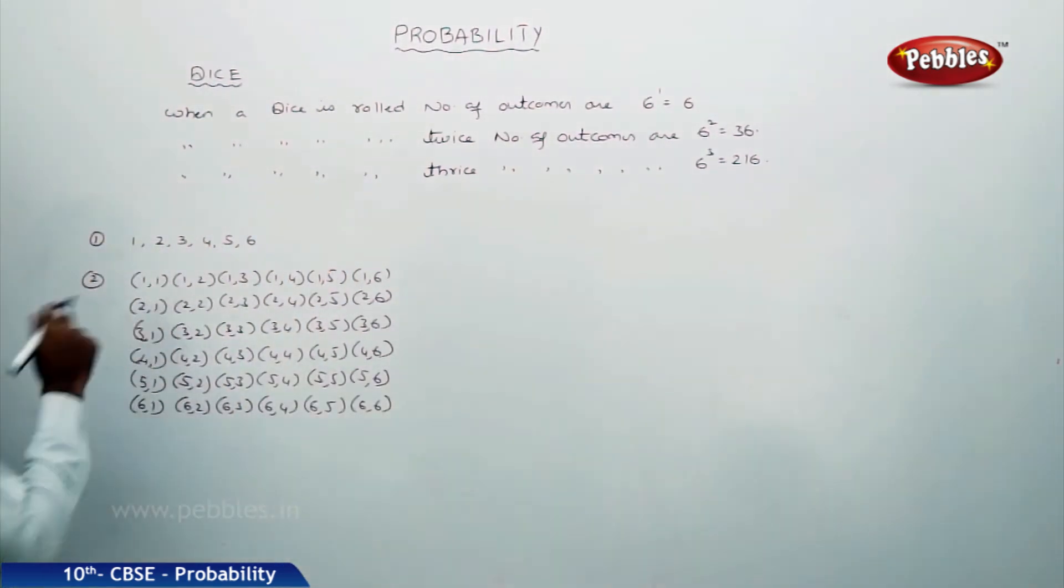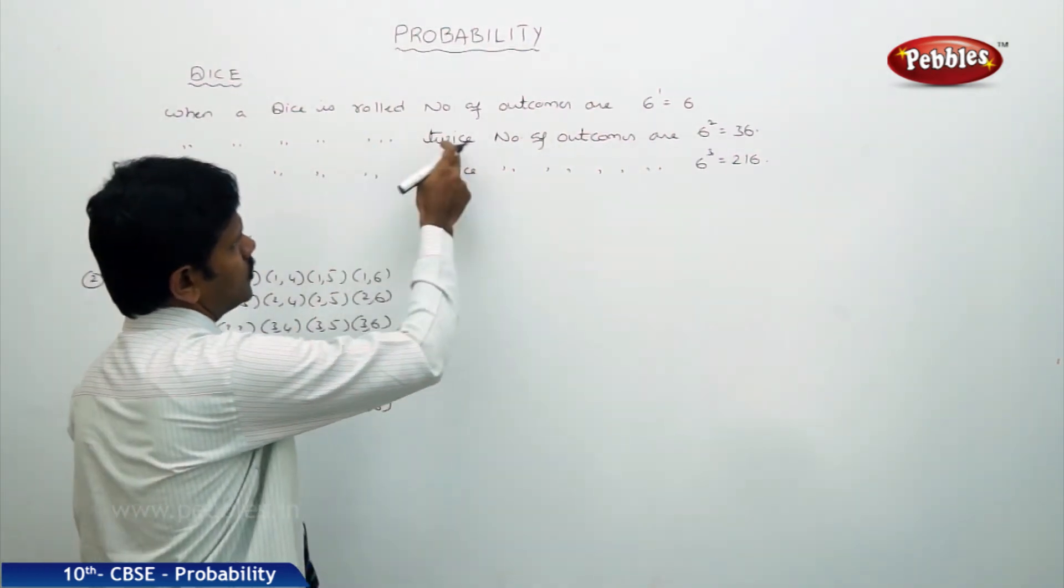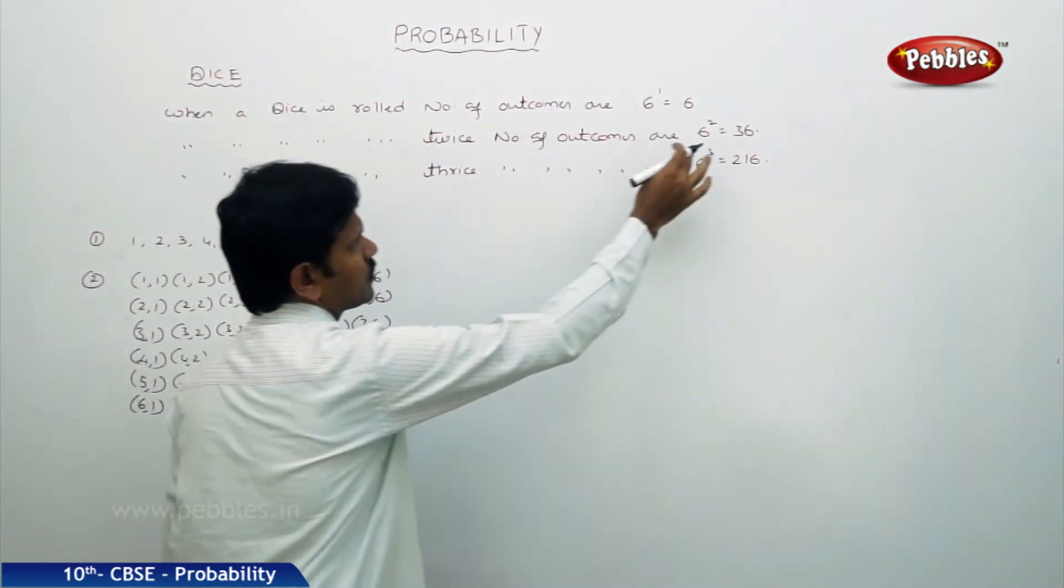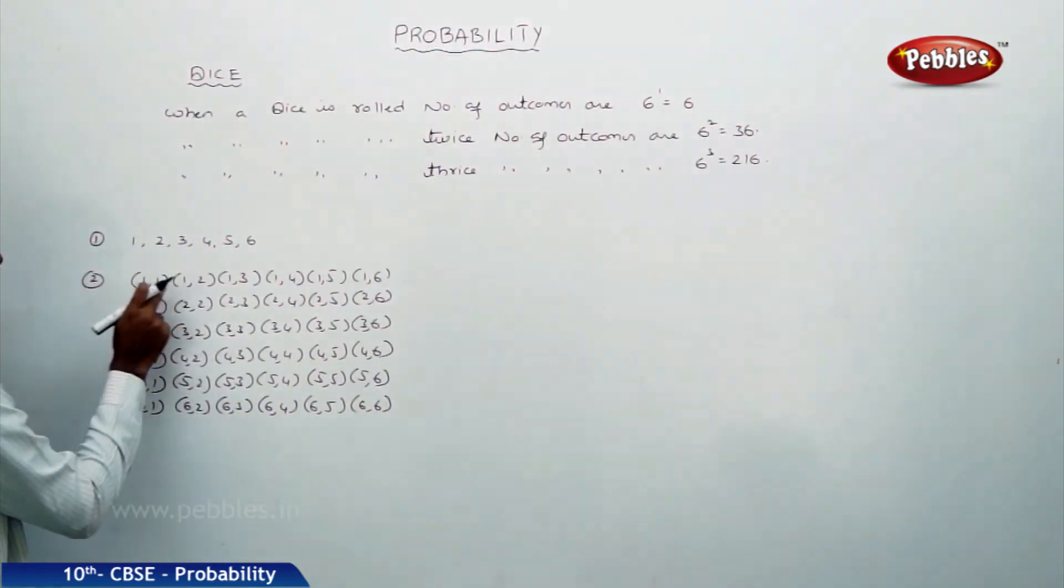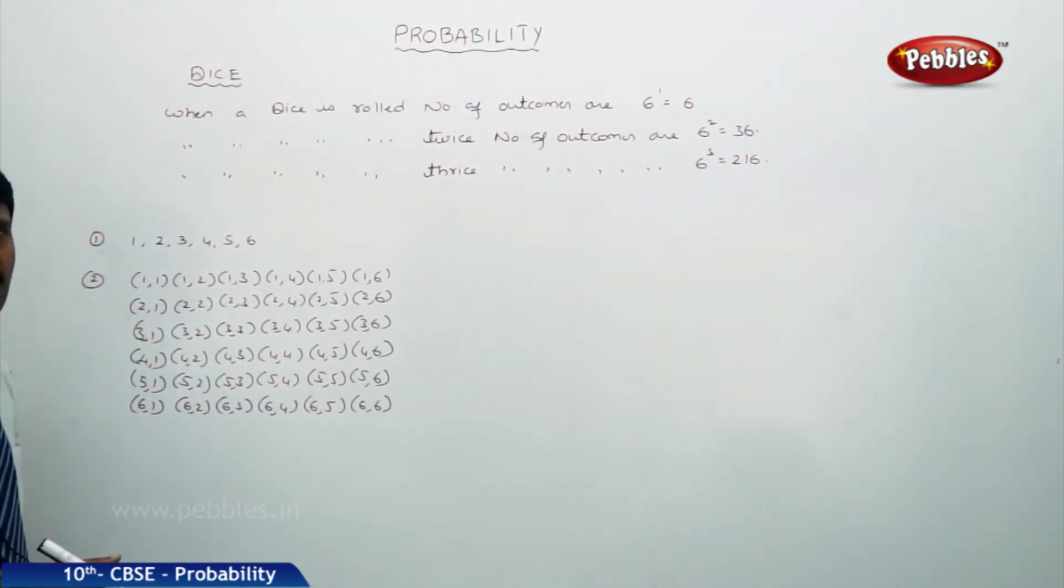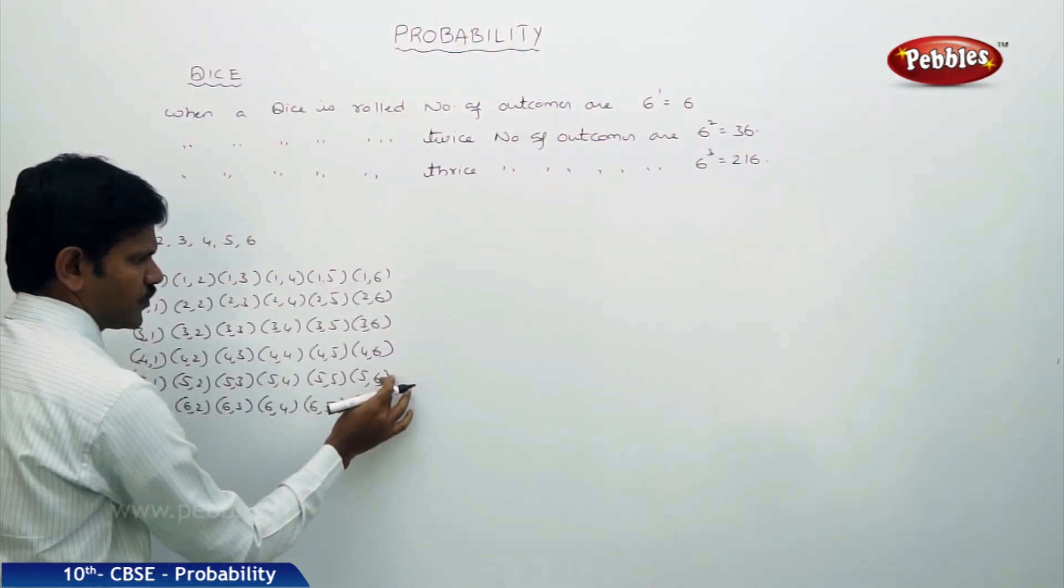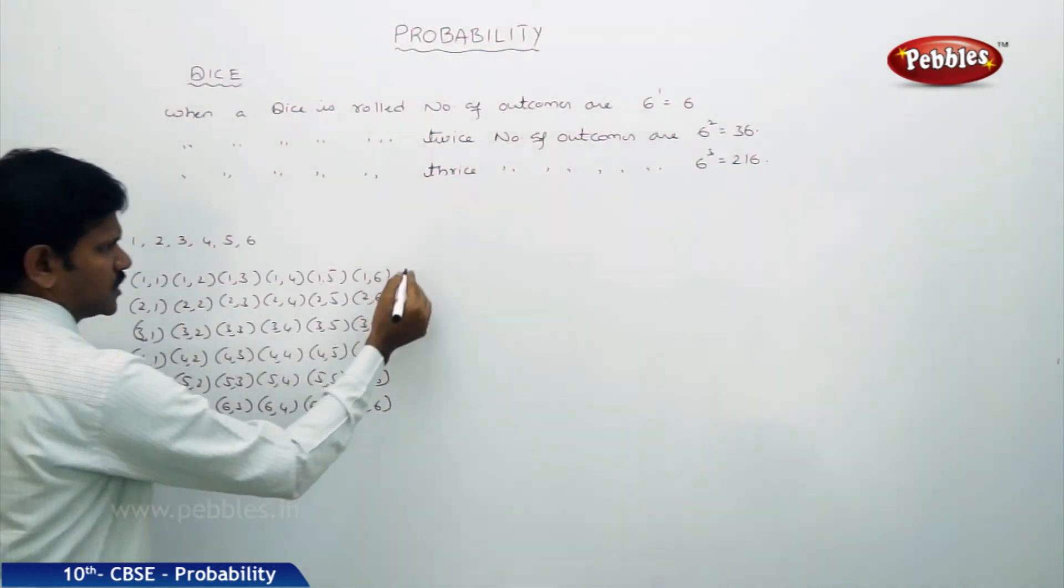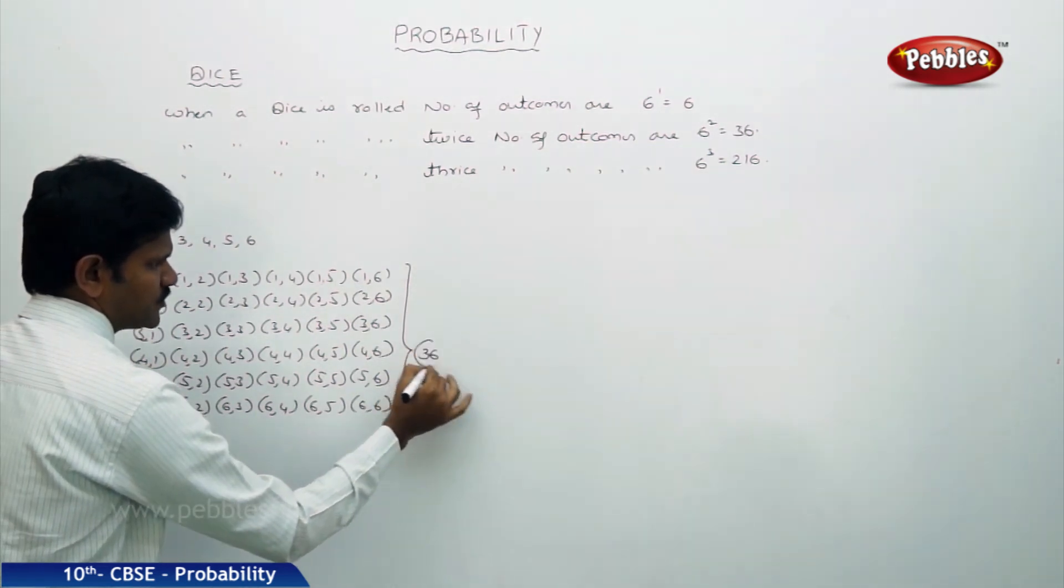That is the total number of outcomes. When the dice is rolled twice, the number of outcomes are 6 squared, which is 36. In each row there are 6 outcomes, and there are 6 rows. That is altogether 36 outcomes.